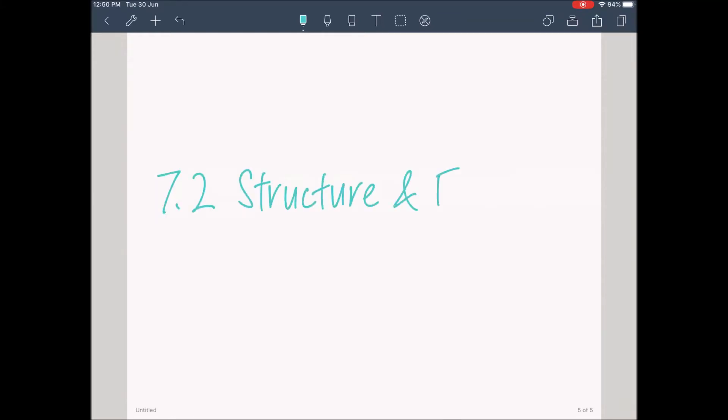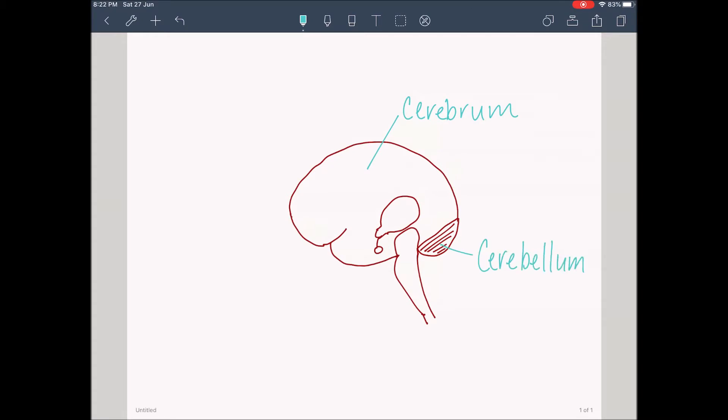7.2 Structure and Function of the Brain. The principal structures of the brain are the brainstem, the diencephalon, the cerebellum, and the cerebrum.